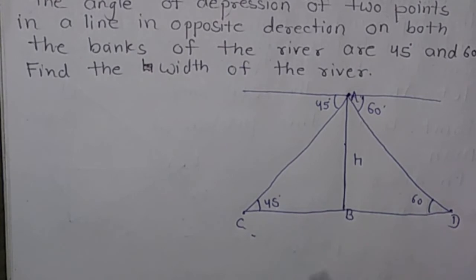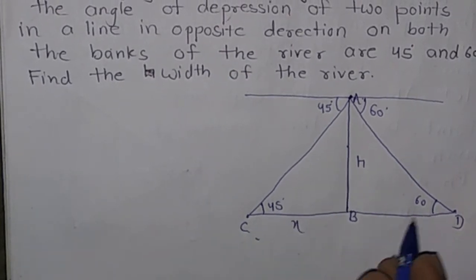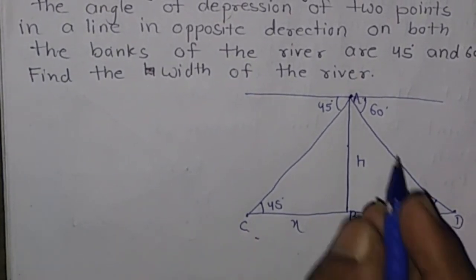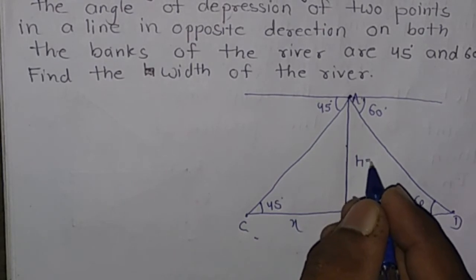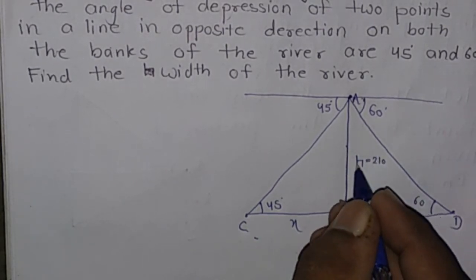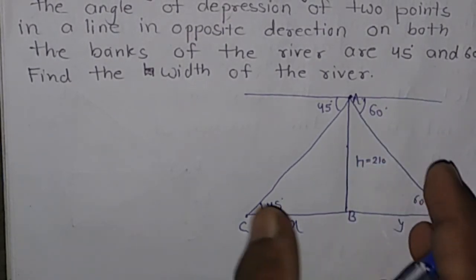Let BC be x and BD be y. The value of h is given as 210 meters, the height of the aeroplane.